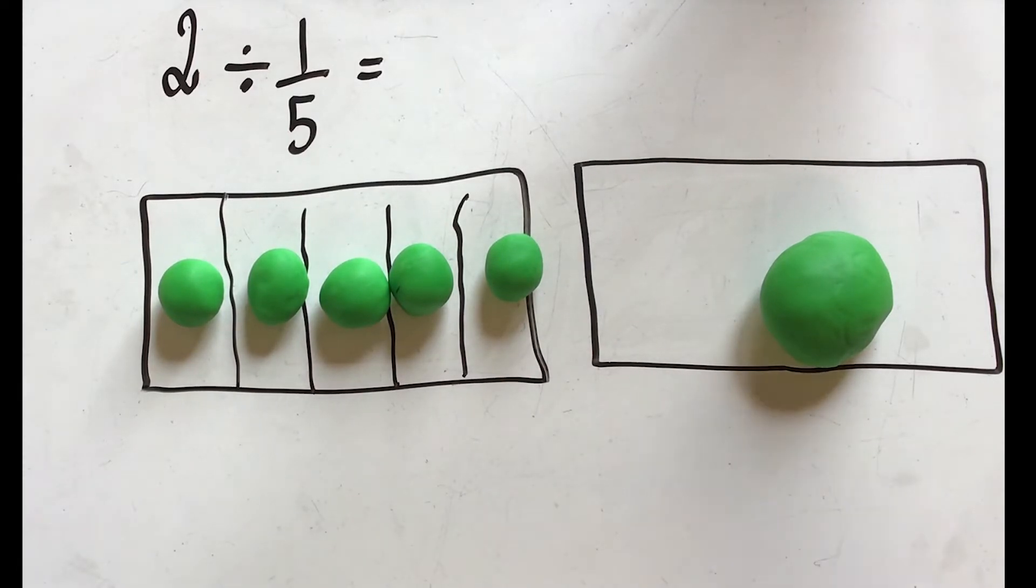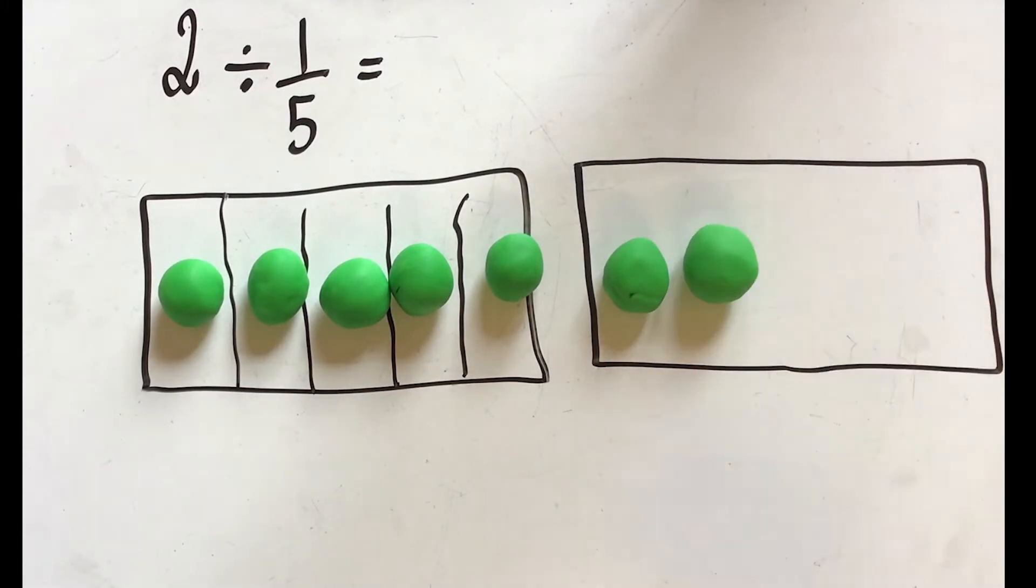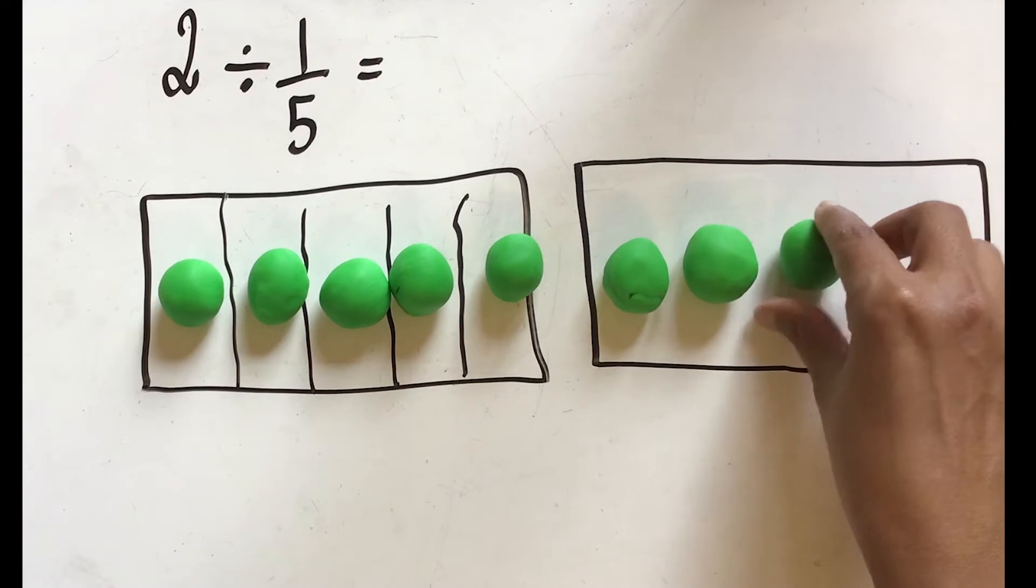Let's do the same for the second ball. The second ball of Play-Doh split into five equal parts.